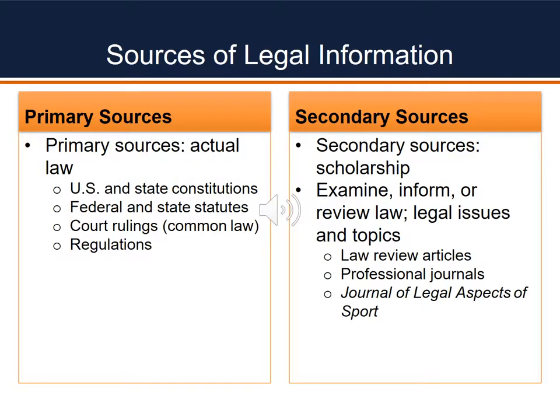Now that we've given a refresher of our legal system, I want us to move on and talk about how we can gather this legal information. This is going to be important going forward as we'll be doing a number of assignments requiring legal research. There are two ways to think about legal research or gathering legal information, and for many of you this would parallel some of the research you've been doing at an academic institution. There are primary sources — they are the law itself. Think back to our four sources: the U.S. and state constitutions, federal and state statutes, court rulings and common law (also think of that as case law), and regulations. Those laws in and of themselves are primary sources.